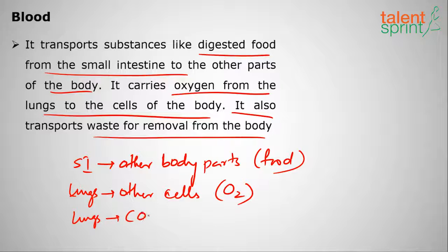Blood also carries CO2 from other parts of the body. The CO2 is collected and sent to the lungs, and the CO2 comes out of the lungs. So these are the three major uses of blood.